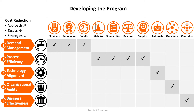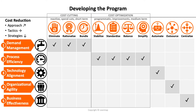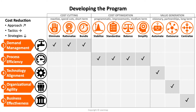There are three types of approaches. Phase one is cost cutting — it's reactive, focuses on cutting spending, and has short-term impact. Followed by cost optimization — it's systematic and programmatic, delivering improvements for the medium term. And finally, value generation — that's visionary, focuses on partnerships with long-term impact.